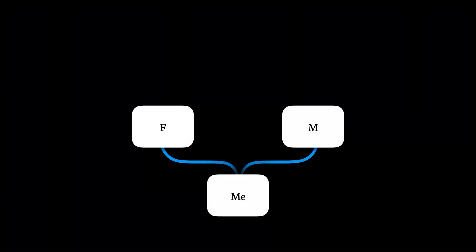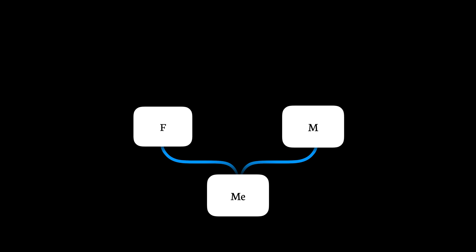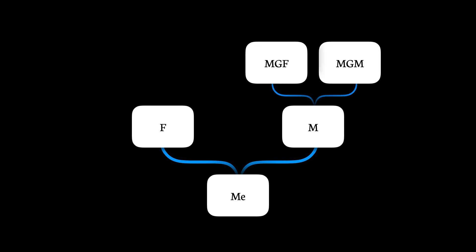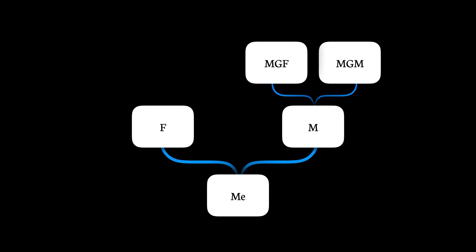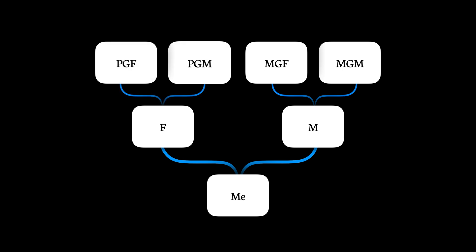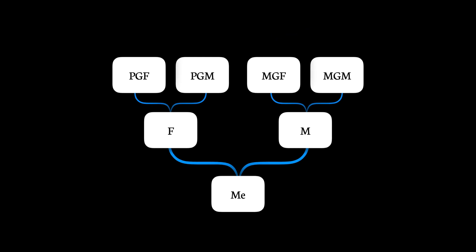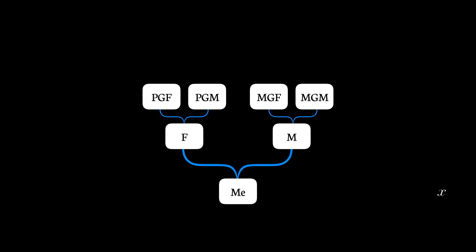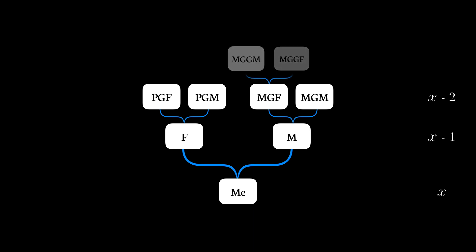Let us take an example. I am a product of my parents. I have the characteristics of my mother as well as my father. My mother resembles her mother and father — my maternal grandmother and grandfather. My father resembles his father and mother — my paternal grandmother and grandfather. My maternal grandfather has many similarities with my maternal great-grandparents and so on. Let us say I belong to generation X. My parents are generation X-2, and their parents — my great-grandparents — are generation X-3.